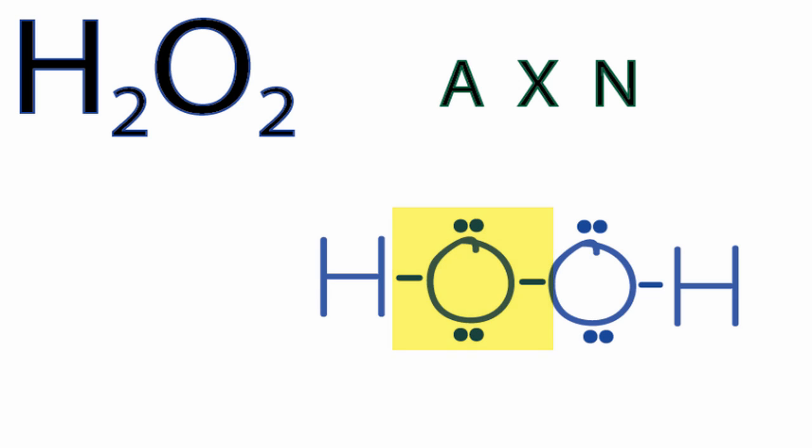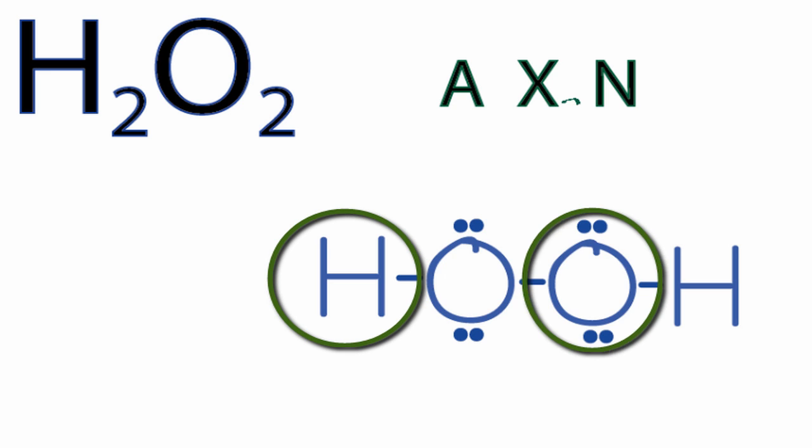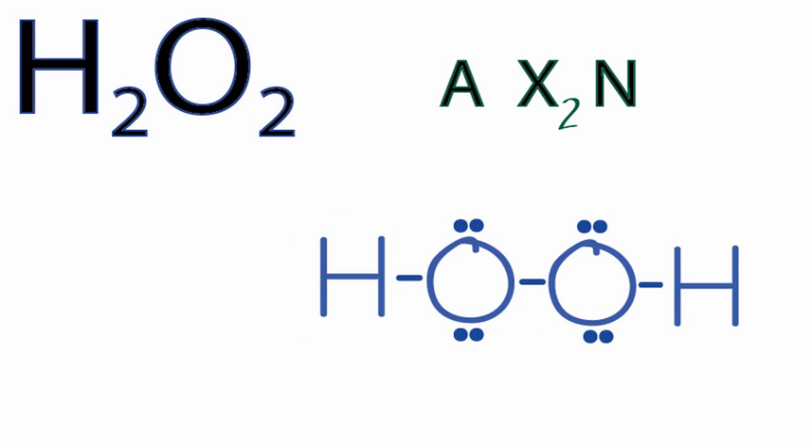So A, that's the oxygen we're dealing with. X, that's the number of atoms bonded to that oxygen. We have the hydrogen and then the oxygen on the other side, so that's 2. And N, that's the number of non-bonded electron pairs. On that oxygen, we have 2 non-bonded electron pairs, so we'll put a 2 right here. So we end up with AX2N2.